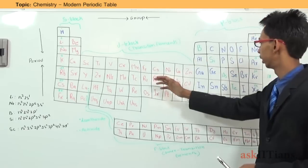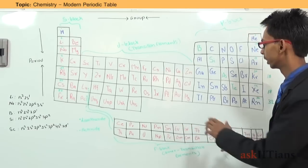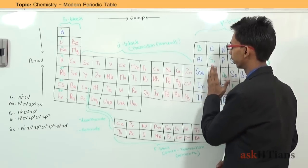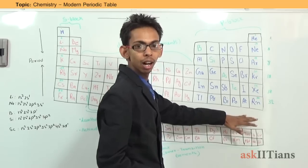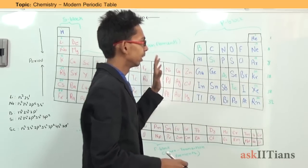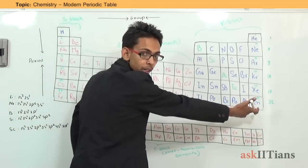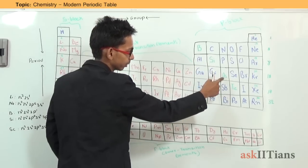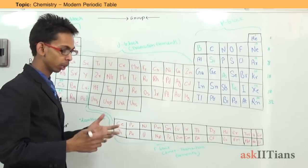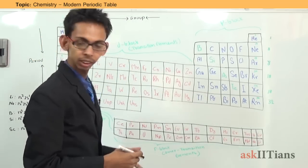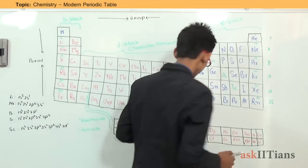In the modern periodic table, all the elements represented in red are metals — you can see that all the metals are situated on the left side. The blue ones are non-metals, and all non-metals except hydrogen are situated on the right side. The elements represented in green are metalloids, meaning those which show the properties of both metals and non-metals. This is the modern periodic table overview.